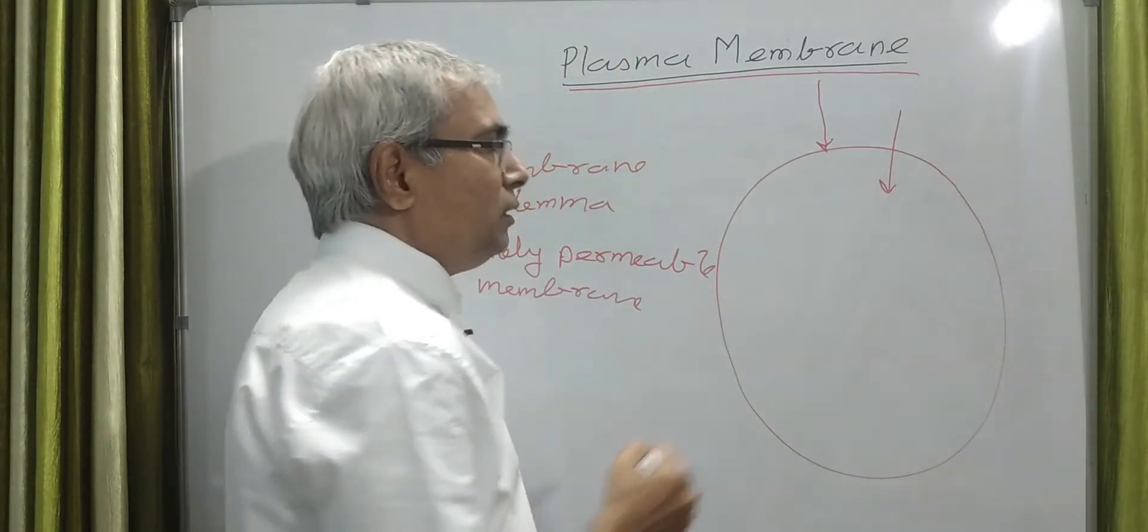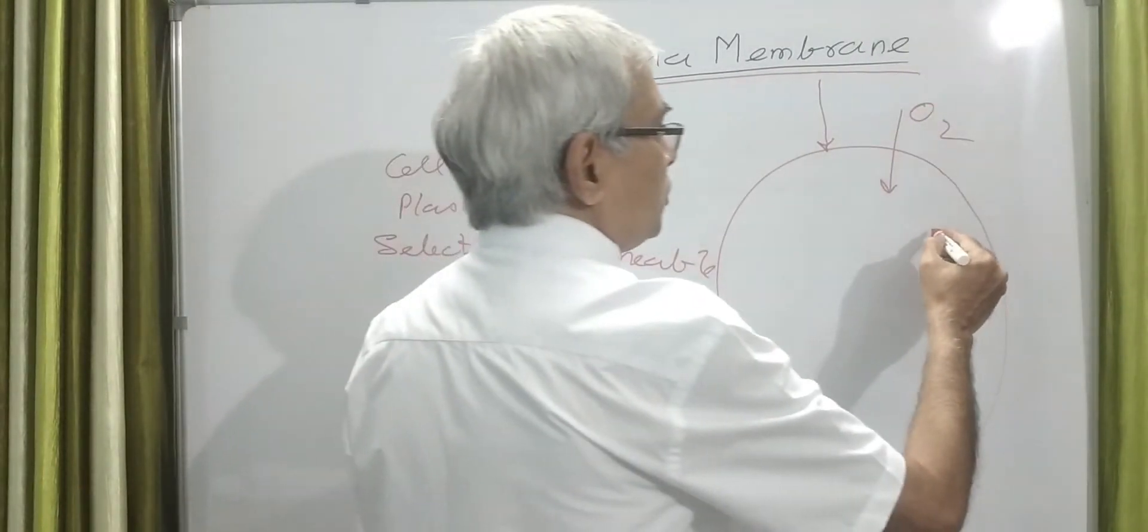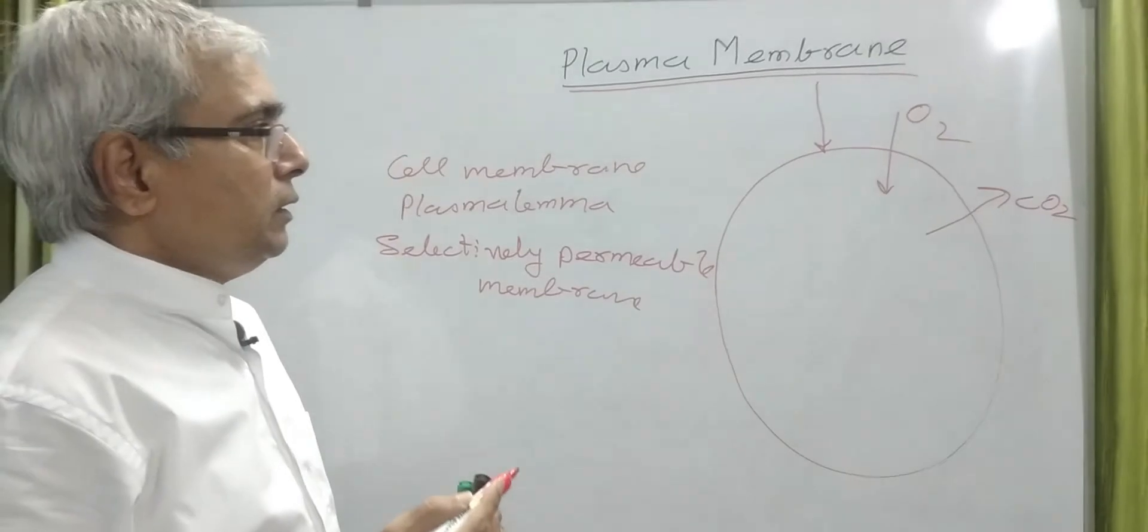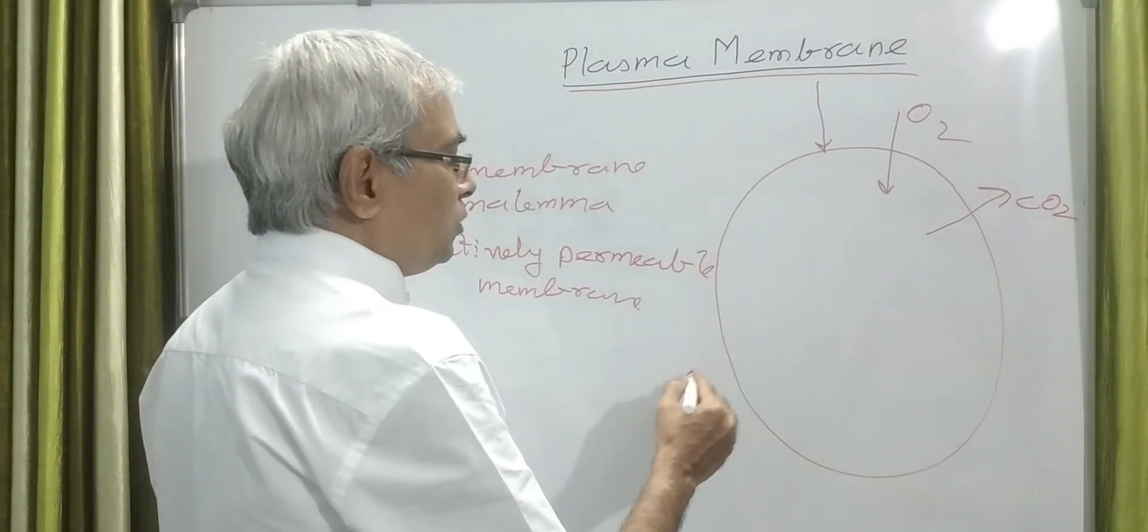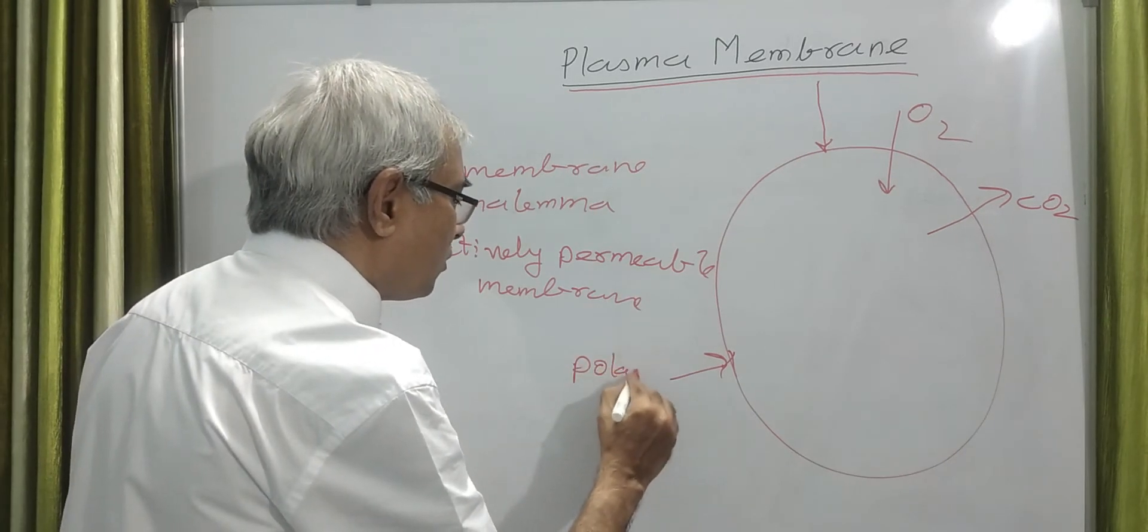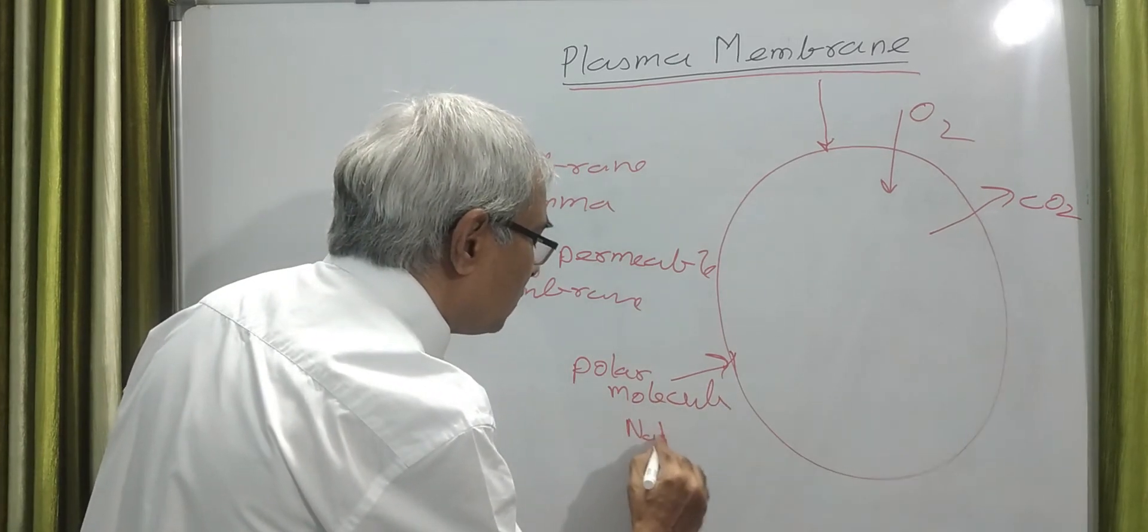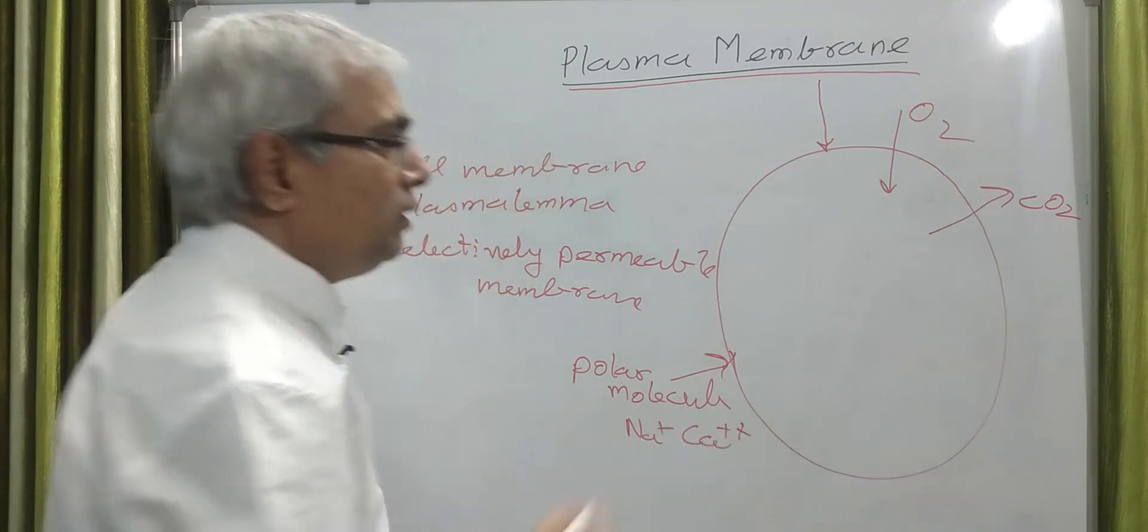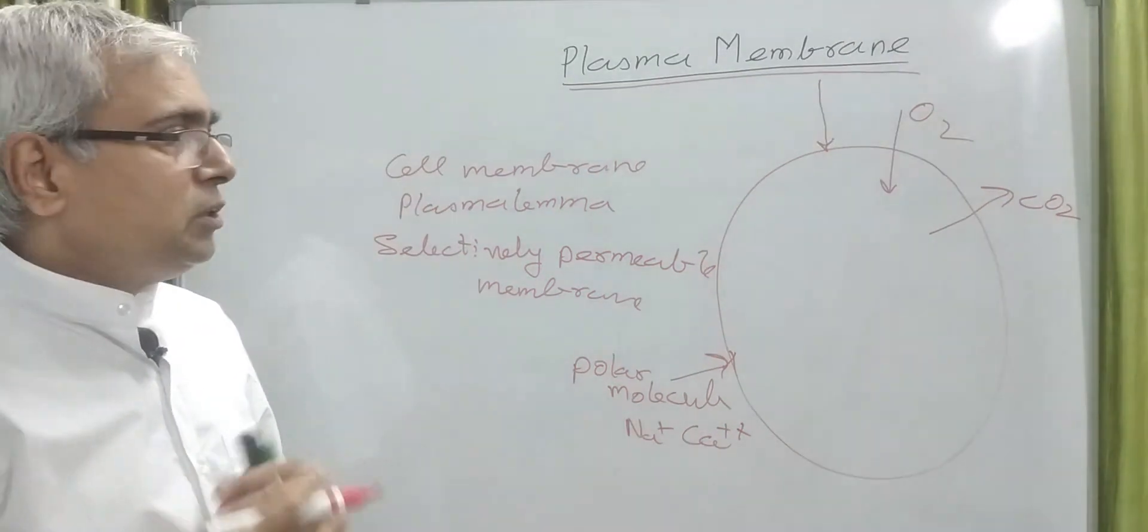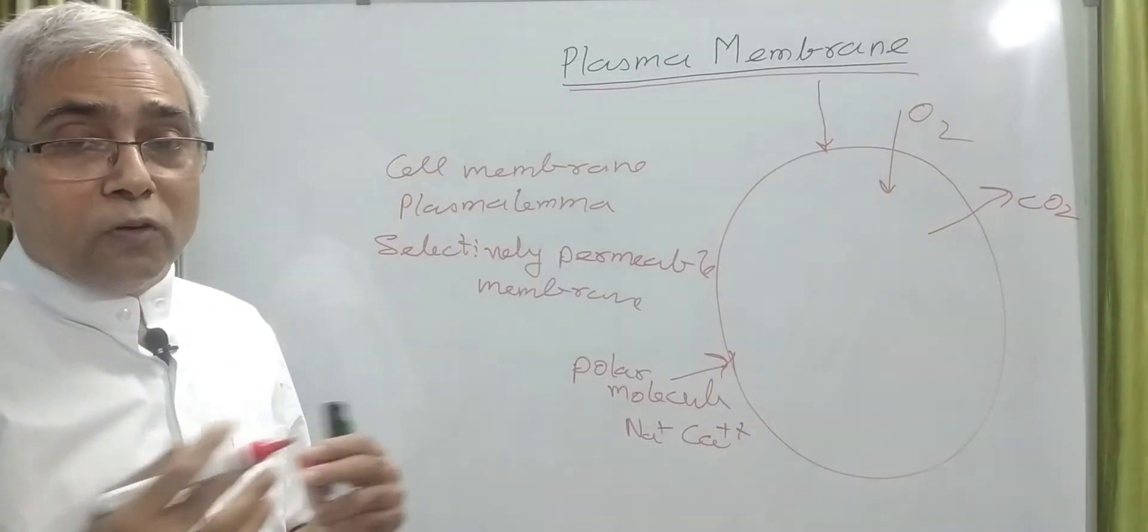This membrane has the capability to allow certain substances to come inside the cell, for example oxygen. It allows certain molecules to go outside the cell, for example CO2. Then it does not allow certain other molecules to enter inside the cell, for example polar molecules like sodium ion, calcium ion, potassium ion. So it has the capability to select which molecules can be allowed to enter inside the cell and which molecules can be allowed to go outside the cell.